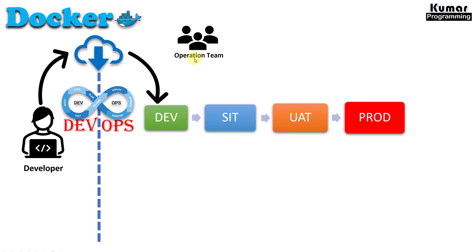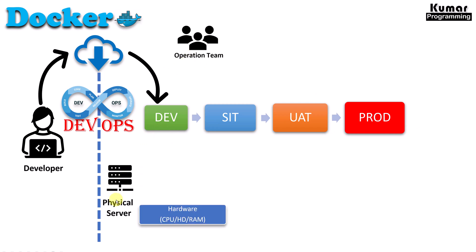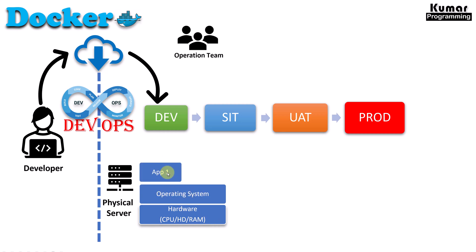Now the operations team comes into the picture and the whole DevOps lifecycle comes in. They are going to create a physical server. The physical server has hardware — CPU, hard disk, RAM — and on top of that they are having an operating system. Suppose that you created an application on Windows, so they are going to have a Windows server. Then they are going to install all the dependencies which you have on your local machine, like the .NET framework, .NET runtime, and all other dependencies. Once everything is installed, they execute the application on top of it.